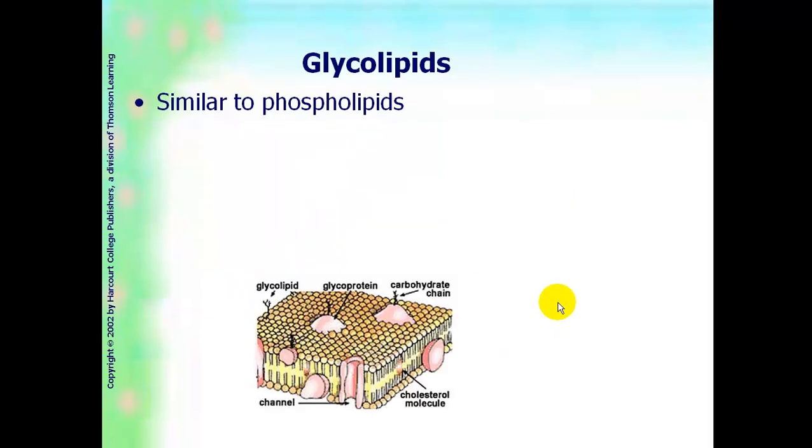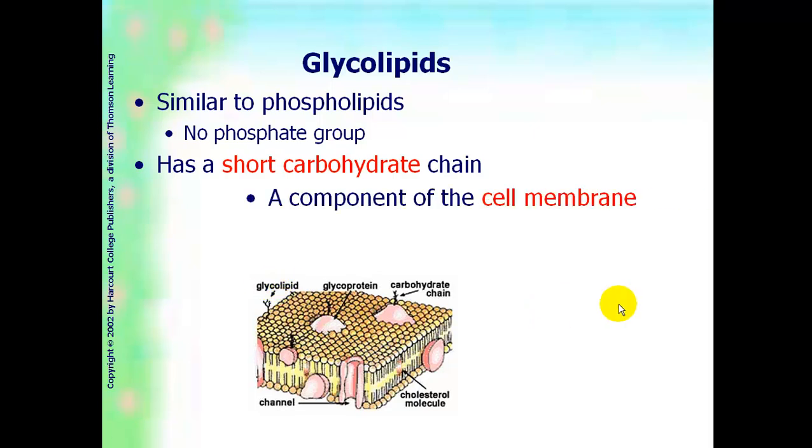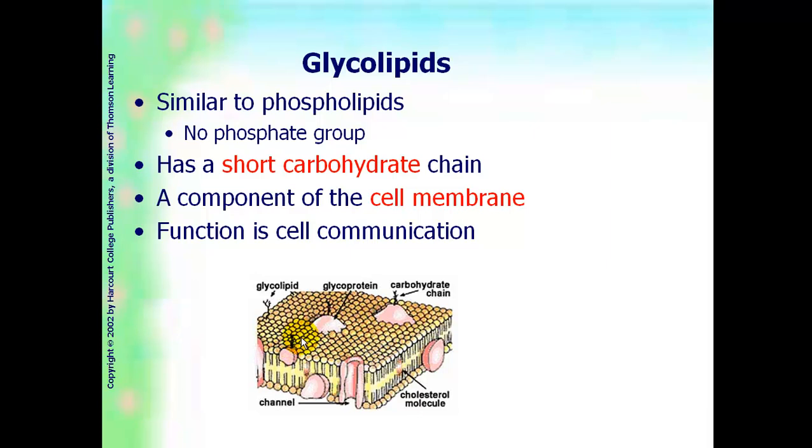Another class of lipids is the glycolipids. They're similar to phospholipids, except there's no phosphate group. And they have a short carbohydrate chain, and they're also associated with the cell membrane. They have to do with cell communication.